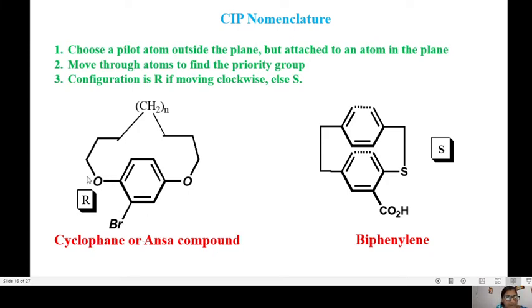For example, in the cyclophane you have the bromo substituent destroying the symmetry of the plane. You choose the pilot atom. We choose to give priority based on which is closer to the substituent. Therefore this particular oxygen gets higher priority. You move 1, 2, and 3 in a clockwise rotation. The rotation is R.